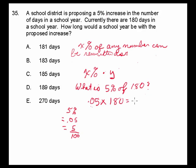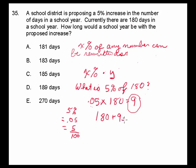When we put this into the calculator, we get 9. So 5% of 180 is 9. The school district is proposing a 5% increase, which means they want to increase the number of school days by 9. Therefore, 180 plus 9 equals 189, and the answer is D.